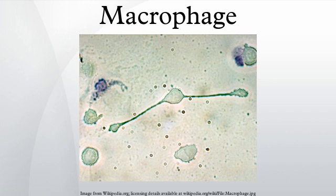Macrophages are stimulated by the low oxygen content of their surroundings to produce factors that induce and speed angiogenesis. They also stimulate cells that re-epithelialize the wound, create granulation tissue, and lay down a new extracellular matrix. By secreting these factors, macrophages contribute to pushing the wound healing process into the next phase.